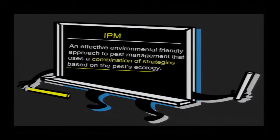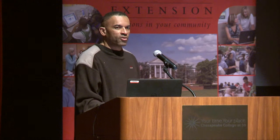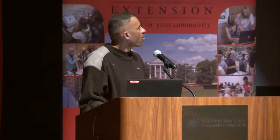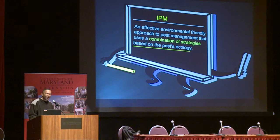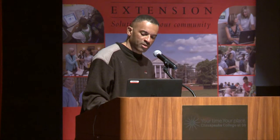I'll start off with the definition of IPM. You'll see a number of definitions, but this is one that I like. IPM is an effective, environmentally sound approach to pest management that uses a combination of strategies based on the ecology of the pests. The key part of that definition is that any strategy developed should be based on the ecology of that pest. Also keep in mind that there's a combination of strategies out there, and sometimes you may want to employ several tactics within the same cropping system.